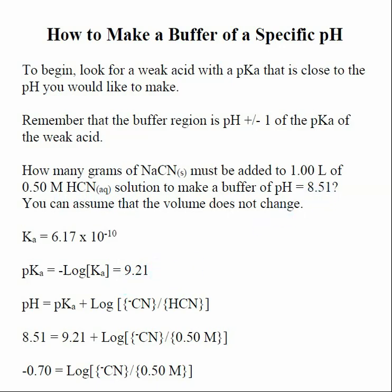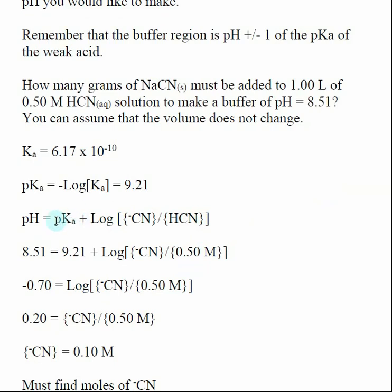So what we're going to do is we know what the pKa is, and we know what pH we want. The only thing that we have to vary the pH of the buffer is by changing the relative amounts of our conjugate base and our weak acid. Here we know how much weak acid we're starting with, so really the question is...